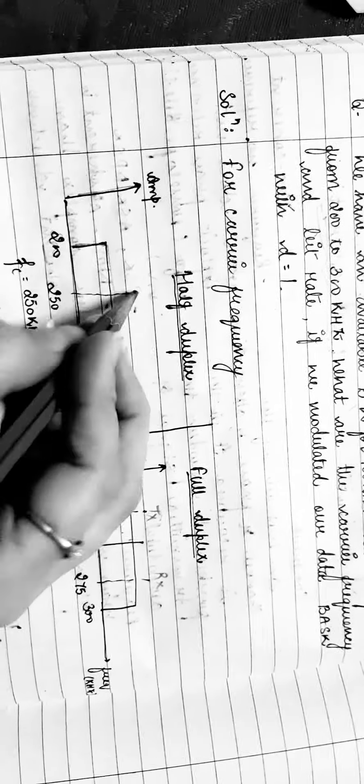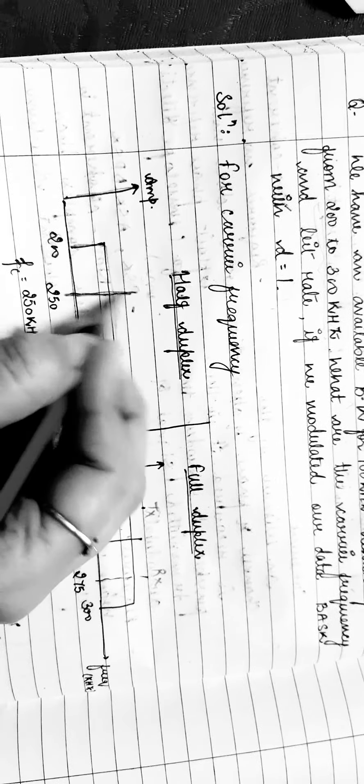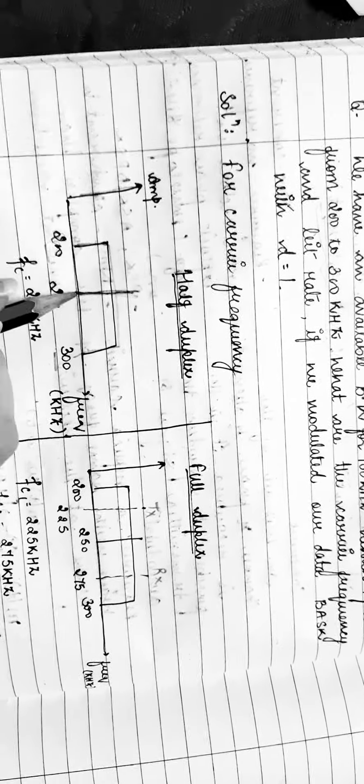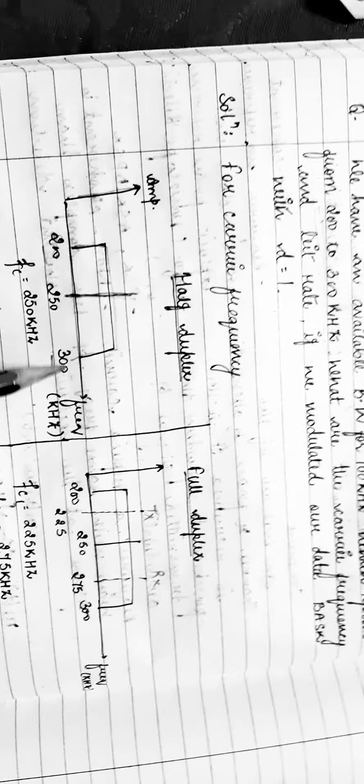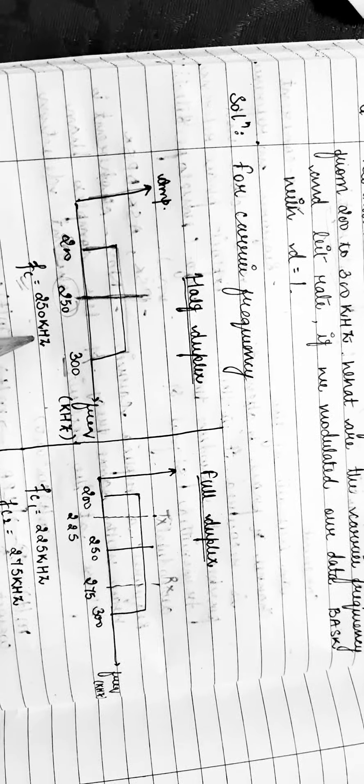The carrier frequency is situated at the center. So FC will be at the center of 200 and 300, meaning the midpoint will be 250. So the carrier frequency will be 250 kilohertz for half duplex.